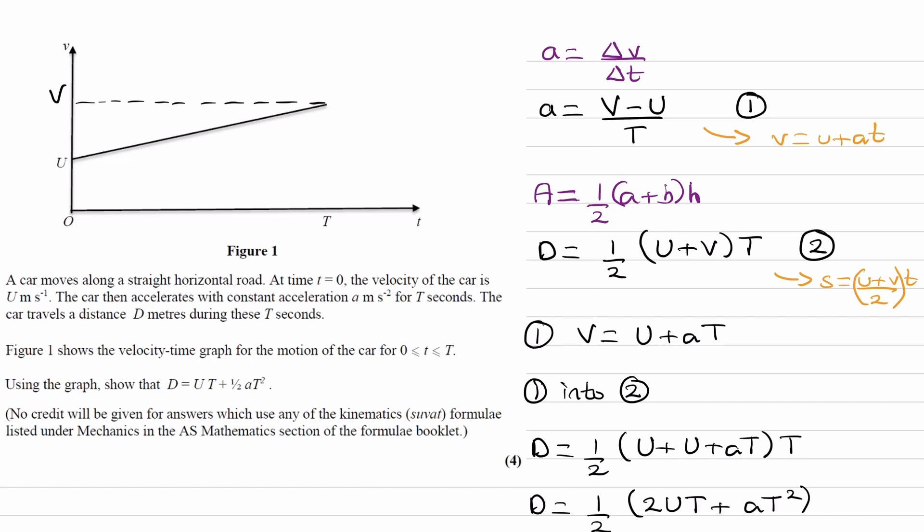We can also get V squared is U squared plus 2AS. Now in that equation, we don't have time, so we can rearrange this equation for time, sub that into here, so replace this time with this equation rearranged for T, which would be V minus U over A. Expand the whole thing out and rearrange, and we will end up with V squared is U squared plus 2AS.